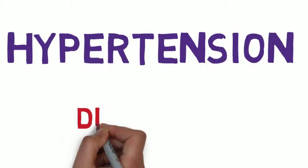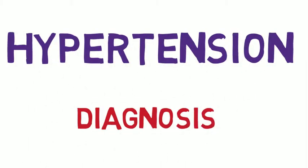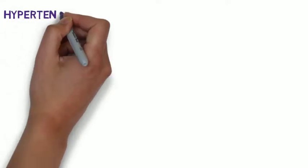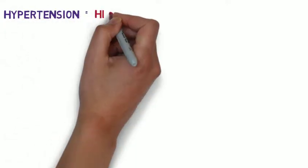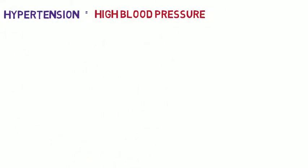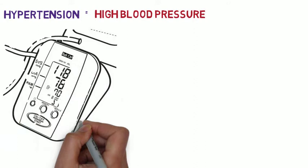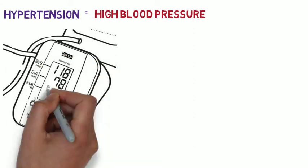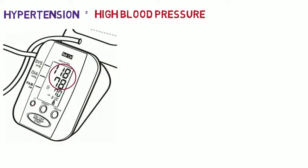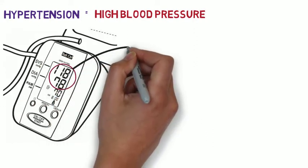Today we are going to be talking about hypertension diagnosis. Hypertension is most commonly known as high blood pressure. When talking about blood pressure, two numbers are always shown, but what do they actually mean?